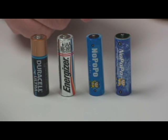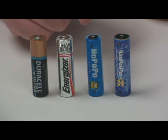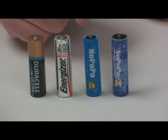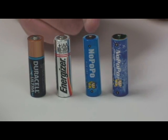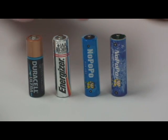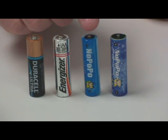What you have before you are four batteries: a Duracell alkaline copper top on the left, followed by an Energizer alkaline, and the two on the right are the new NoPoPo or Non Pollution Power batteries.